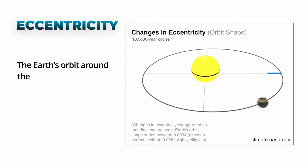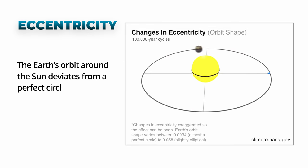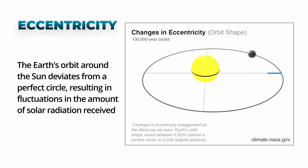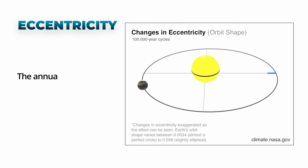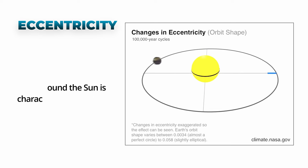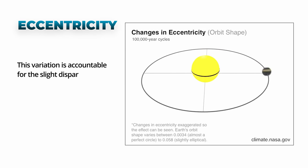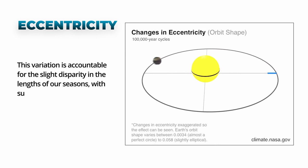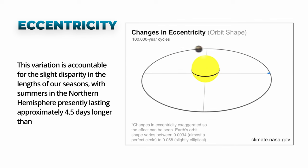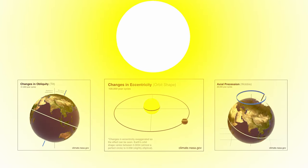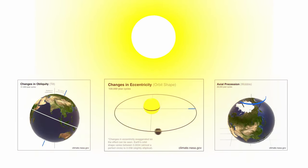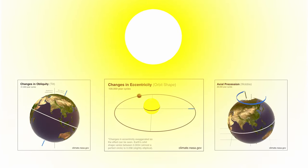The Earth's orbit around the Sun deviates from a perfect circle, resulting in fluctuations in the amount of solar radiation received throughout the year. This eccentricity means summers in the Northern Hemisphere presently last approximately 4.5 days longer than winters. These cycles, like a celestial tuning fork, vibrate at different frequencies and are pivotal for the amount of solar radiation that reaches the Earth.